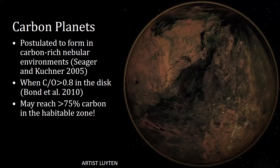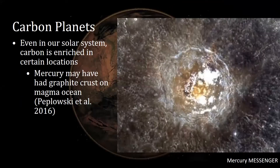A carbon planet — here's another artist's rendition. These are postulated to form in nebular environments that have a lot of carbon. Especially when the carbon-to-oxygen ratio exceeds 0.8 in the disk, then we may start to form a carbon planet. There are some estimates that these even reach something like 75% carbon in a single body in a habitable zone. Even in our own solar system, carbon can be enriched in certain locations, and there are studies of Mercury from the MESSENGER probe that indicate concentrations of graphite on the surface.